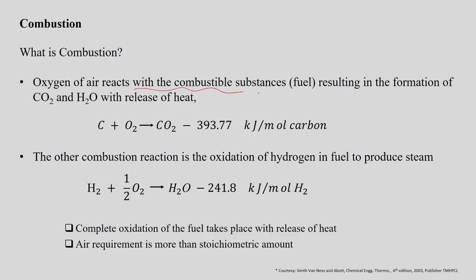Now let us discuss the other thermochemical conversion technique: combustion. The thermochemical conversion process most widely used at commercial scale to produce energy from biomass is combustion. In this process, oxygen reacts with combustible substances, resulting in the formation of two stable products — CO₂ and H₂O — along with heat.